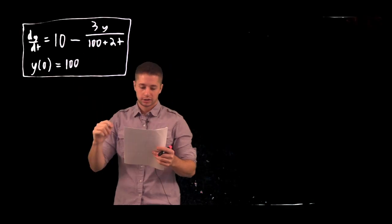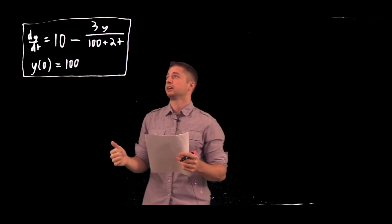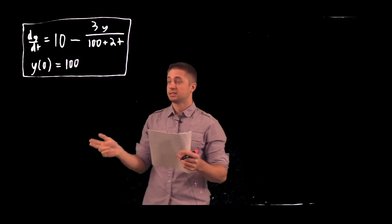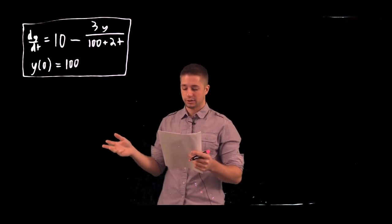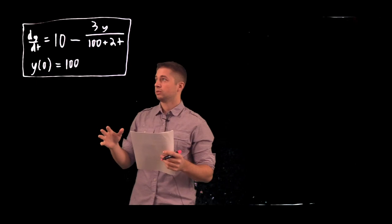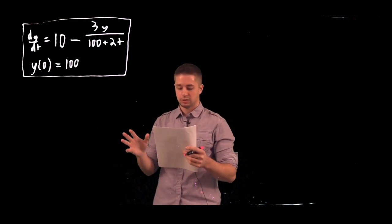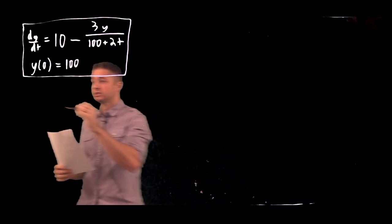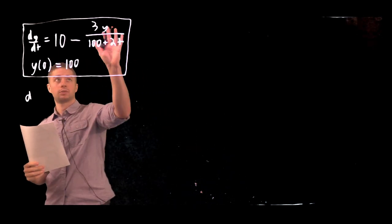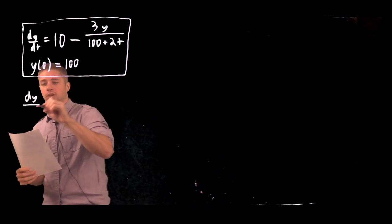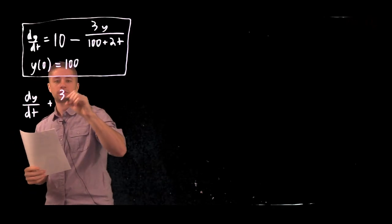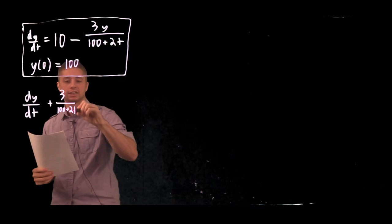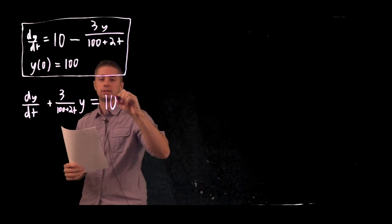Looking at this differential equation: it is linear, but it's not homogeneous, not separable, and not constant coefficient. So our best approach is the method of integrating factors. First, we move the y term to the other side: dy/dt plus 3/(100 + 2t) · y equals 10.